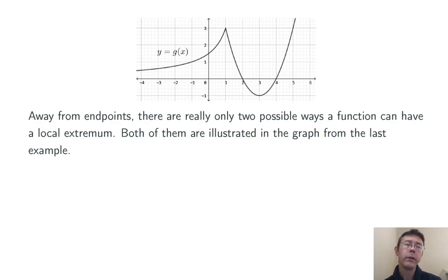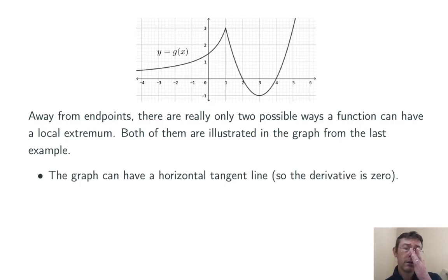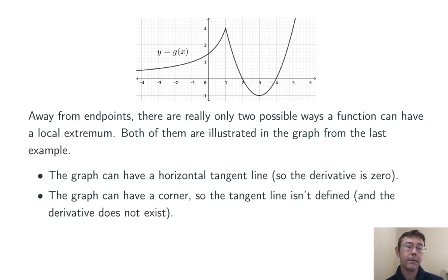Away from endpoints, there are really only two possible ways that a function can have a local extremum, a local minimum or maximum, and both of them are illustrated in this graph from the last example. First of all, the graph can have a horizontal tangent, and so a derivative of 0 at that local minimum or maximum. Secondly, the graph can have a cusp or corner, so the tangent line isn't defined, so the derivative does not exist at that local maximum or minimum.